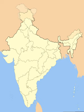The ten Part C states included both the former chief commissioner's provinces and some princely states, and each was governed by a chief commissioner appointed by the President of India. The Part C states were Ajmer, Bhopal, Bilaspur, Coorg, Delhi, Himachal Pradesh, Kutch, Manipur, Tripura, and Vindhya Pradesh.